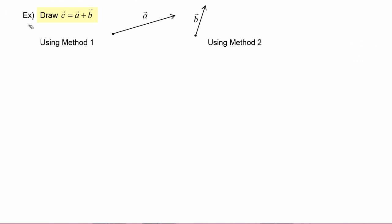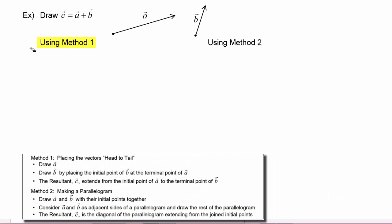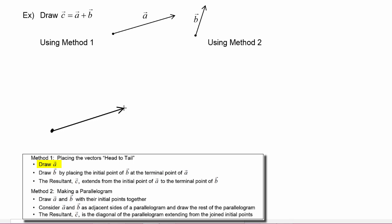In this example we have to draw vector C so that it equals vector A plus vector B. Let's start with method one. The first step says to draw vector A — we give ourselves an initial point and then draw a vector that is equal in length and going in the same direction as vector A.